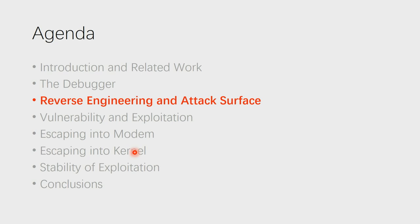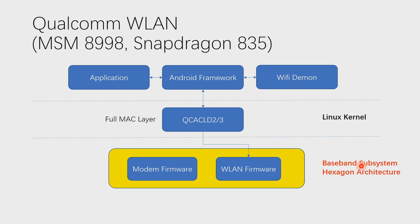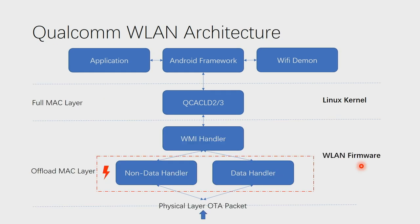Now we have the debugger, and we can analyze the modem and WLAN much more easily. Let's review the architecture of Qualcomm WLAN. The WLAN is now in the baseband under the Hexagon architecture. If we control the WLAN, we will control the baseband subsystem. From the architecture figure, we can see that the Qualcomm WLAN firmware is not a fat firmware — most of the WLAN functions are implemented in the Linux driver QCACLD. The firmware itself is quite simple, leading to a smaller attack surface. The work done in the firmware is called the offload handler.